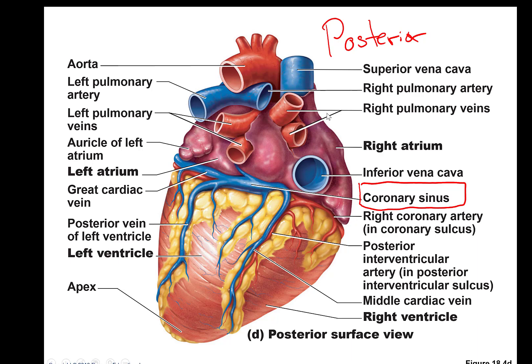A couple other things you'll see here are the pulmonary veins. In this posterior view you can see the four pulmonary veins — the two right pulmonary veins returning to the heart from the lungs, and the two left pulmonary veins returning from the left lung. Remember, pulmonary refers to lungs.